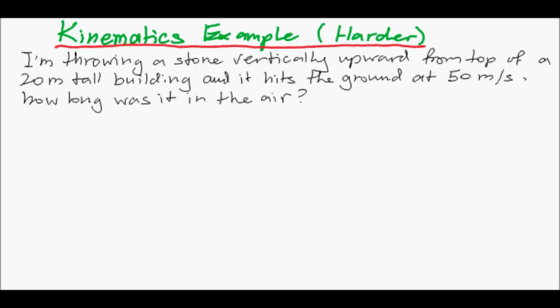Maybe it helps if we just draw ourselves a little diagram of how all this happened. We know that there's 20 meters here. We're throwing a stone from the top here and it's going like this and it hits the ground at 50 meters per second and this is the ground. That's essentially what's happened, noting that we're only counting vertical motion, so we're not taking into account horizontal motion at all.